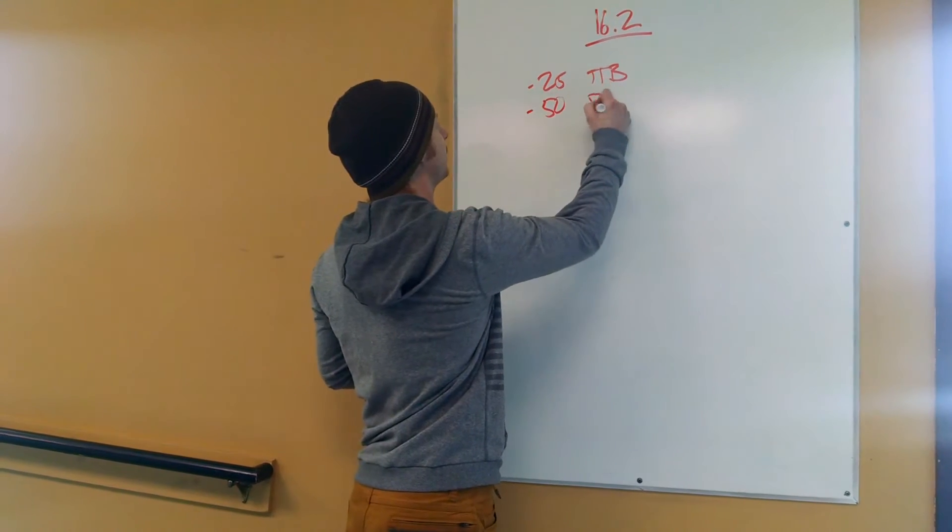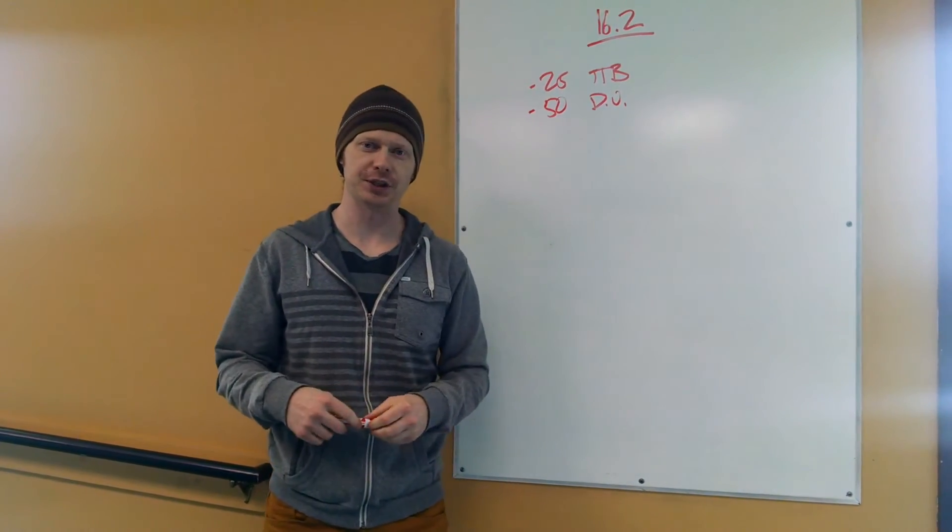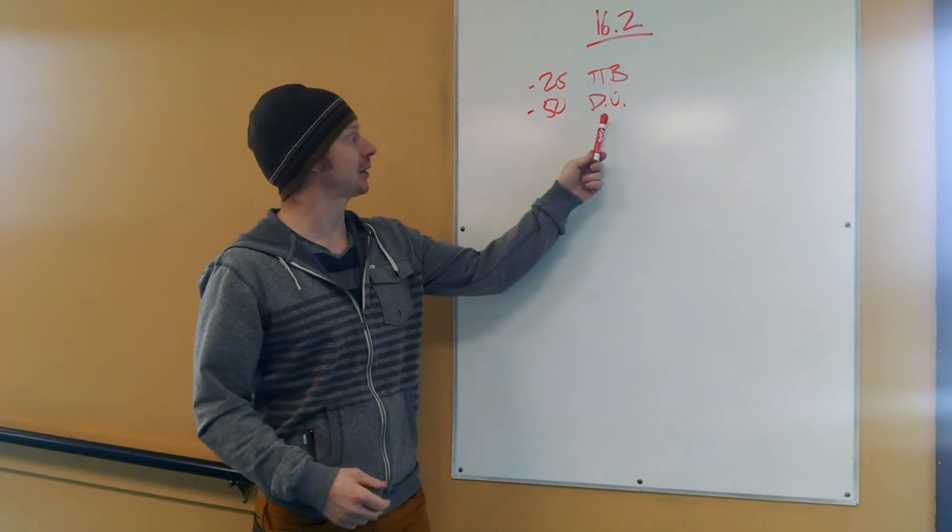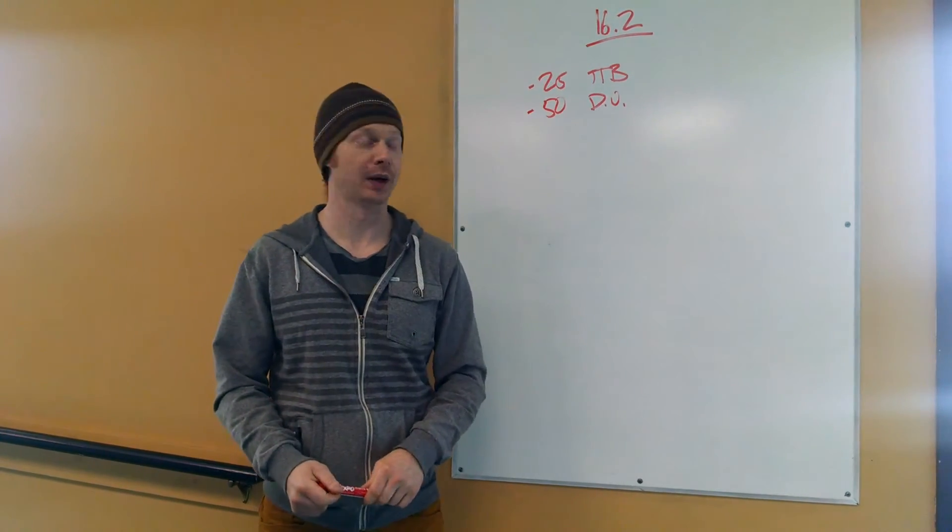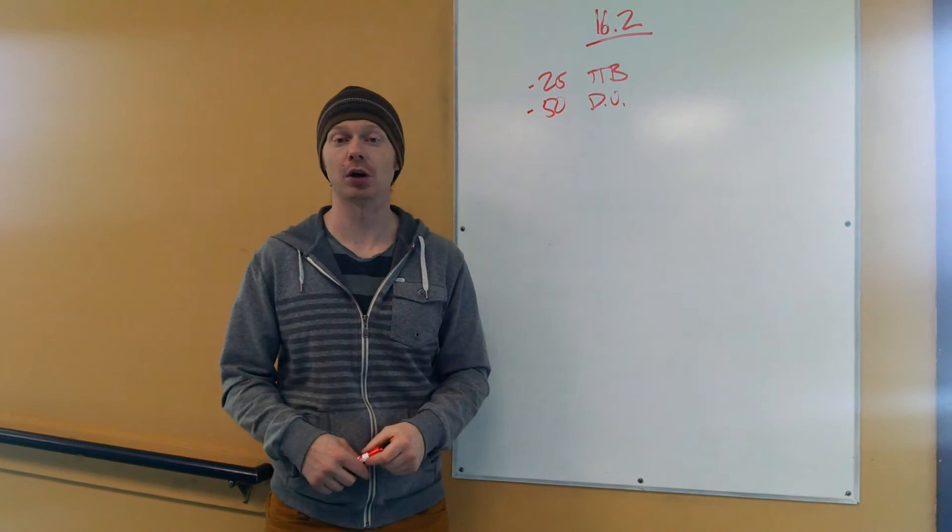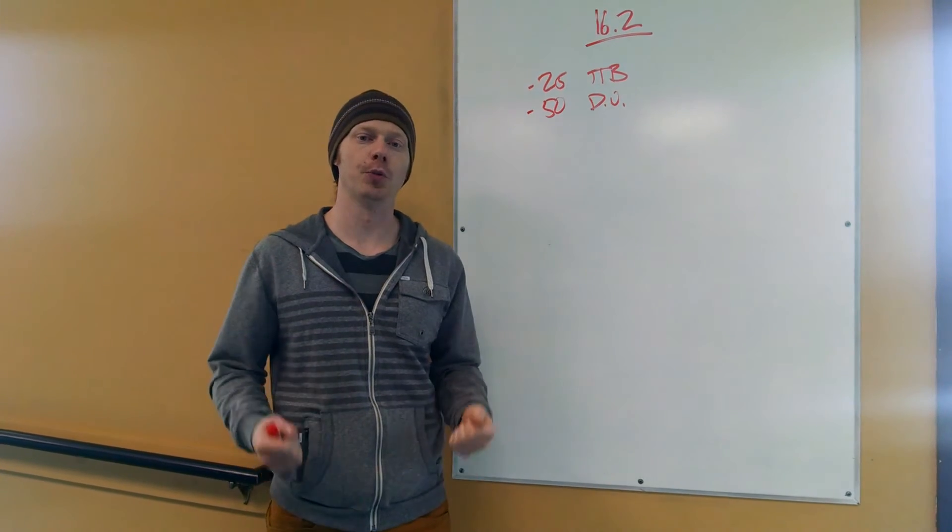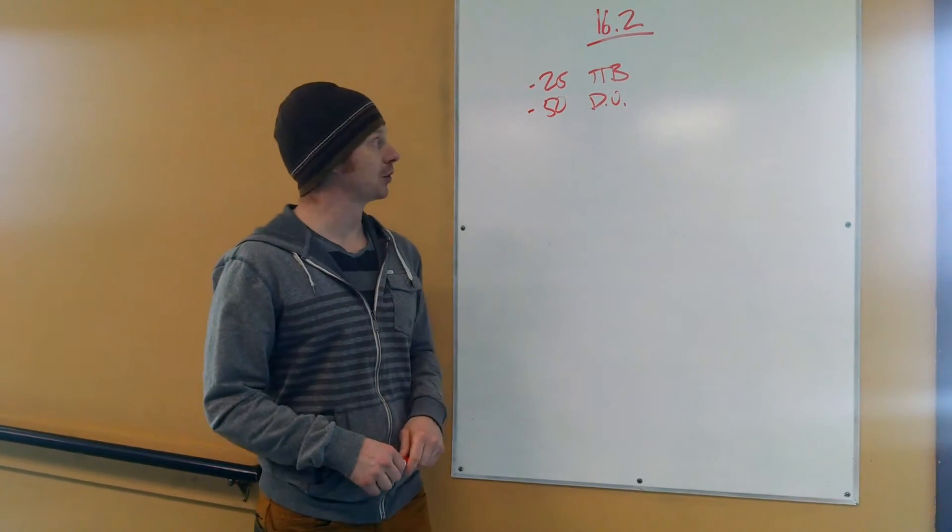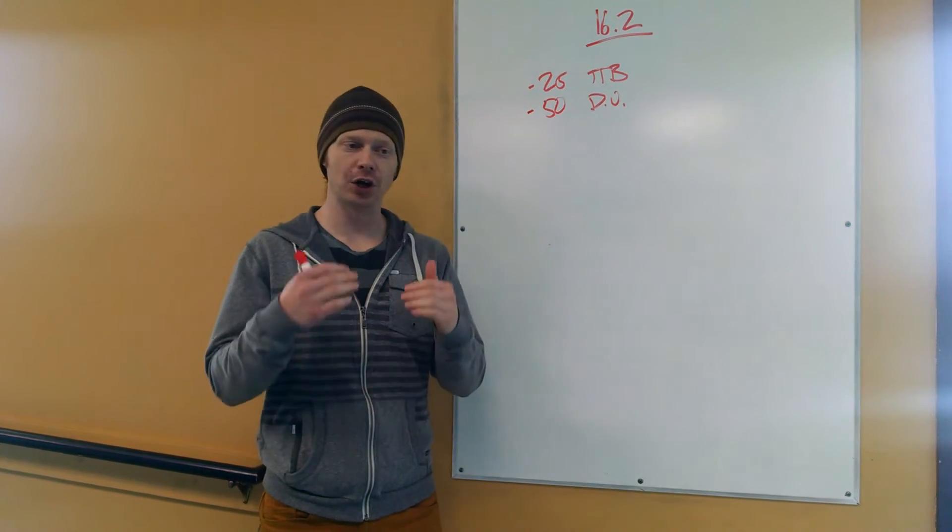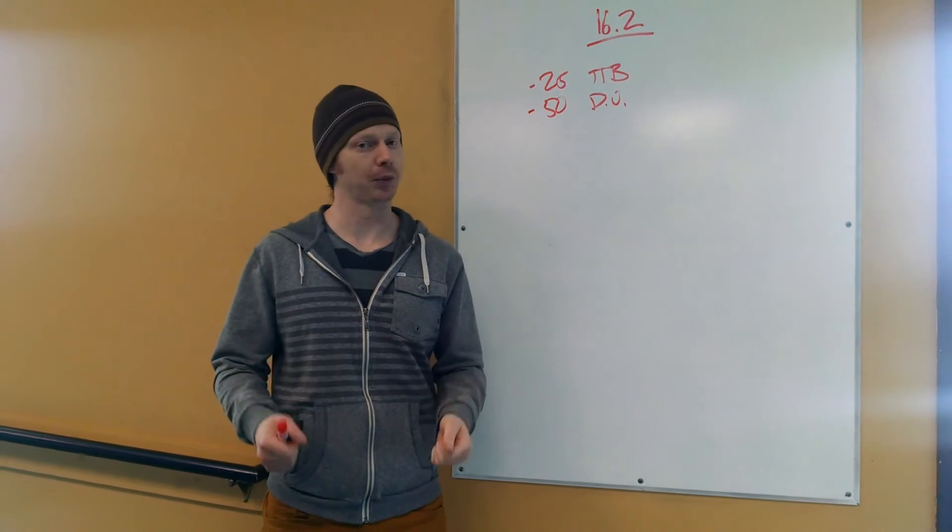25 toes to bar, 50 double unders. Here's another place where we're going to have a big discrepancy. Some of us have strong double unders. Some of us do not. Again, this is going to be hugely psychological. If you're able to keep pace through the toes to bar, you get to your jump rope. If you are somebody with strong double unders, I want you to take a breath, know that you own that movement, get on the rope and bang them out. For those of us without strong double unders, the things that we can really focus on to stay efficient are slowing down your jump, giving yourself enough time to get that rope under twice.